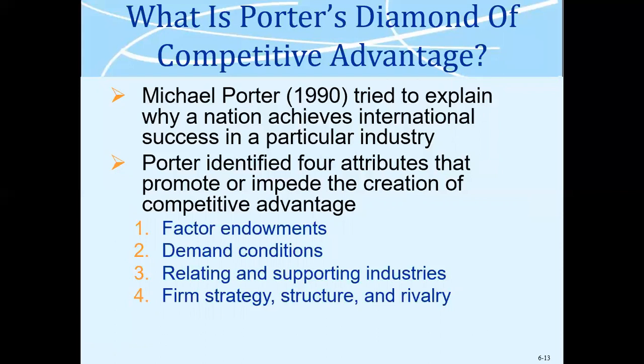Michael Porter, a very famous scholar in management — you must have studied Michael Porter's Five Forces — also gave a model called Michael Porter's Diamond. He gave a theory in the form of a diamond in which there are four things that can help a multinational company or a country gain competitive advantage on the international level. Number one: factor endowments. Number two: demand conditions. Then relating and supporting industries. And finally: firm strategy, structure, and rivalry.